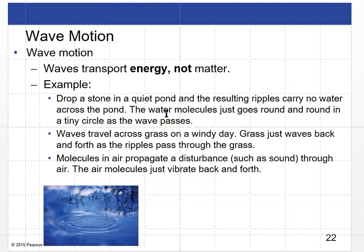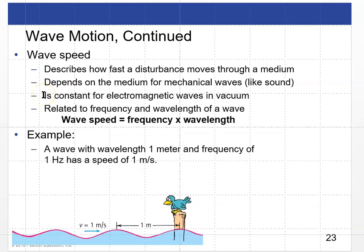Waves transport energy, not matter. If you drop a stone in a quiet pond, the resulting ripples carry no water across the pond — the water molecules just go in little circles as the wave passes. The wave carries the energy and disturbance across the pond. Similarly, air molecules propagate sound by vibrating back and forth as the wave energy passes through them. Wave speed describes how fast the disturbance moves through a medium — it depends on the medium for mechanical waves, and in vacuum it is constant for electromagnetic waves.